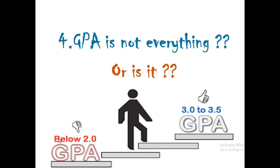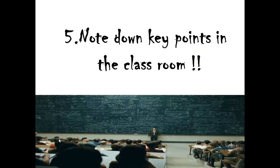The next thing: GPA is not everything — or is it? It depends on which path you choose. If you choose academia as your future career, GPA does matter a lot, because if you want to be a teacher your GPA will be considered for jobs. But if you want to join industry as a software engineer or programmer, GPA does not matter as much — some companies will not consider your GPA at all and will focus on your skills. A moderate GPA is fine for industry, but for academia you need a high GPA.